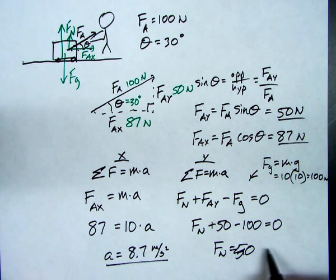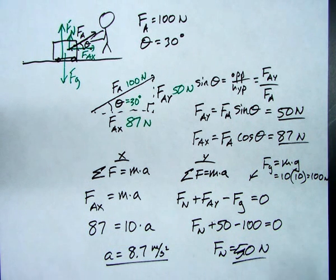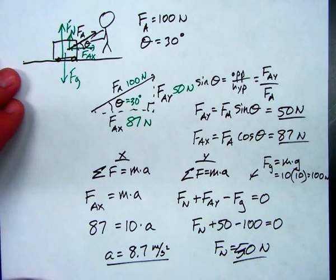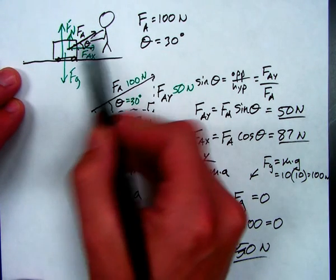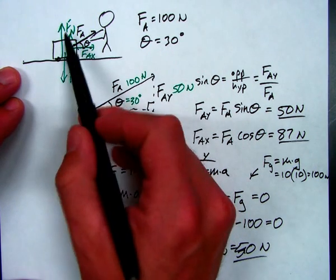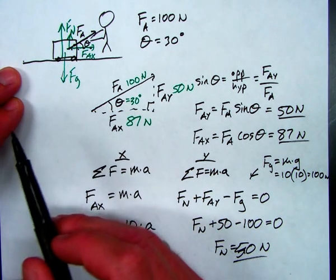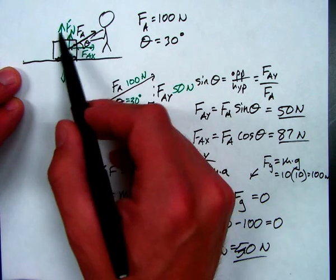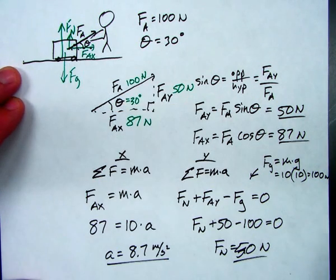50 Newtons of normal force in this situation. Now, if I was pushing down on this block instead of somebody pulling, if there was a downward component, the normal force would have to be larger than the force of gravity. In this case, the normal force is much less because there's an upward component of the applied force.